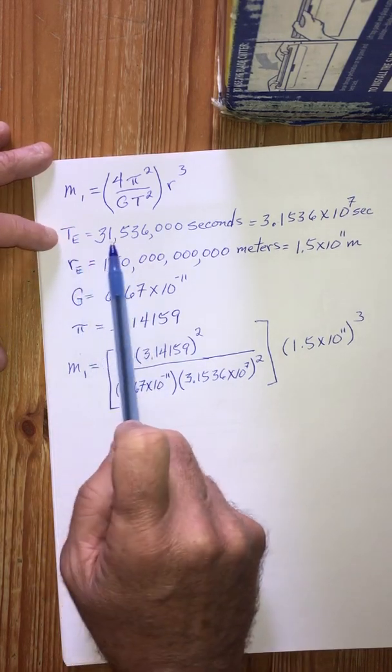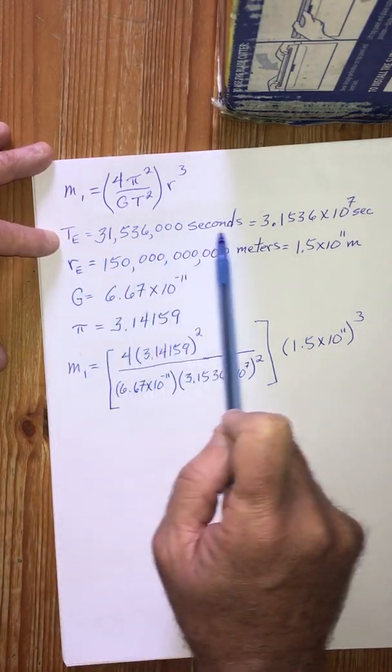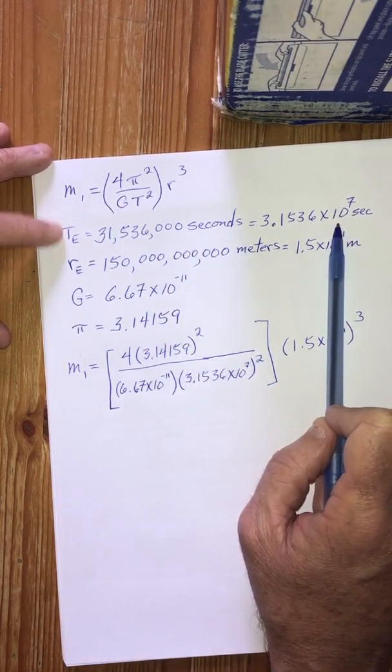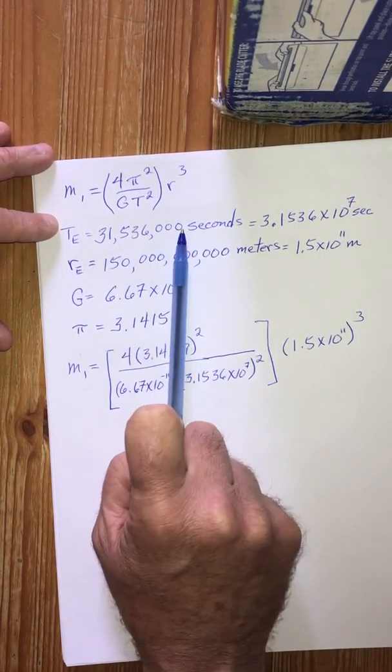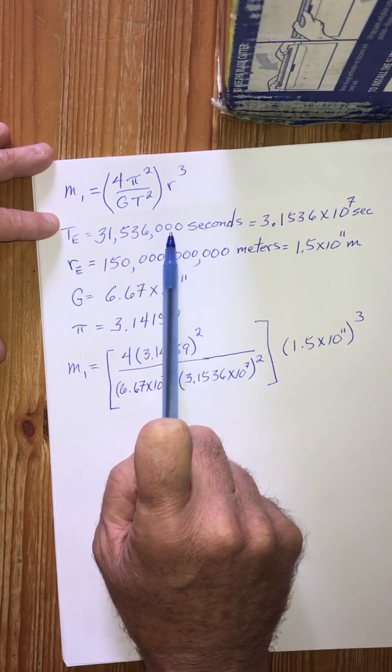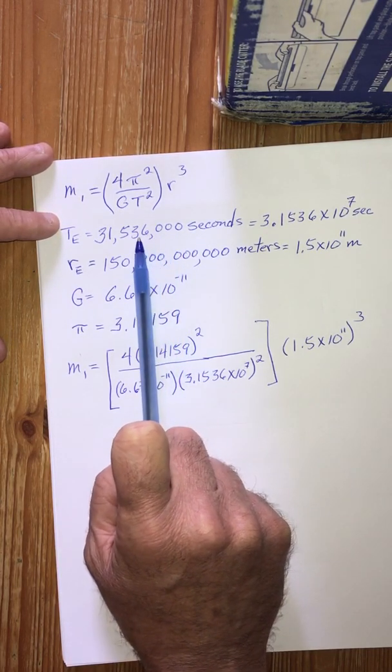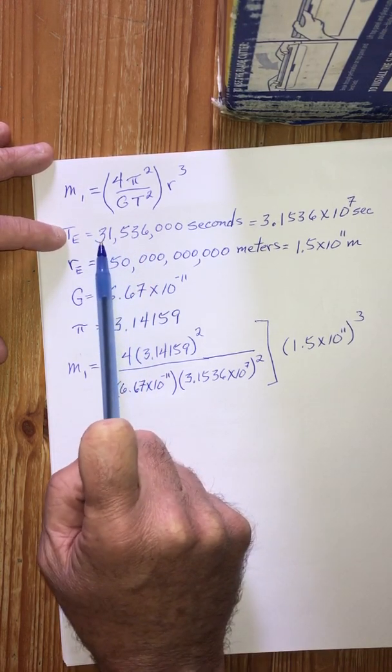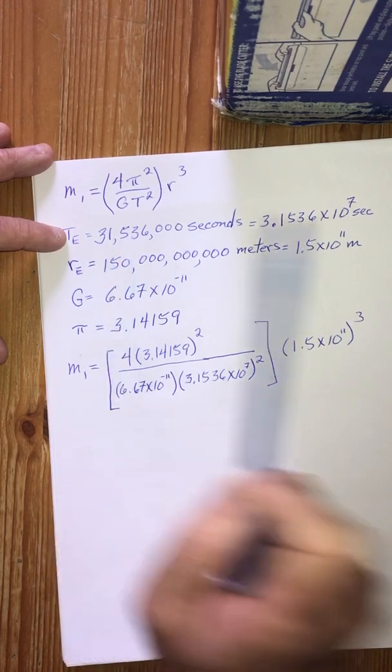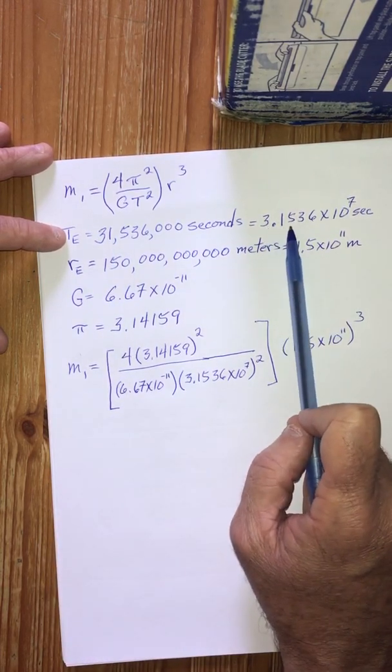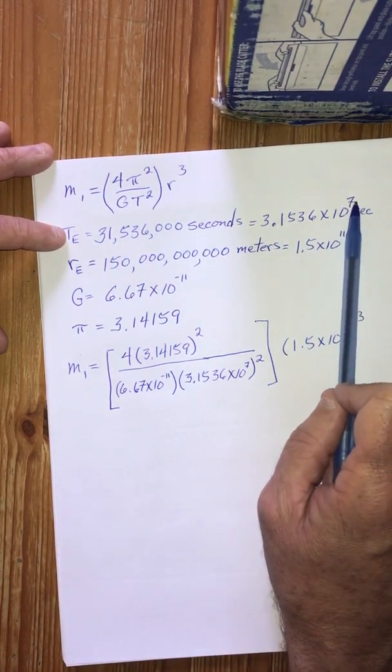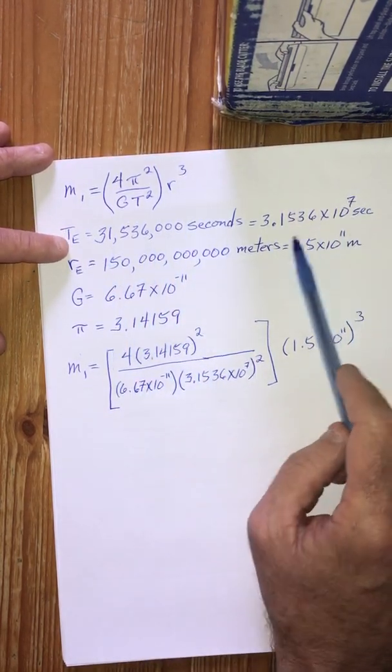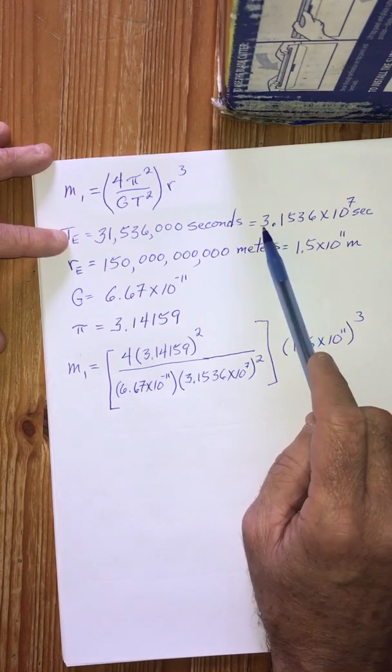So here's the Earth's period in seconds, and notice that I've expressed this in scientific notation. So what I did was I took the decimal point at the end of the number and counted one, two, three, four, five, six, seven places, and put the decimal point between the three and the one.